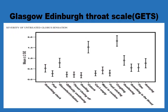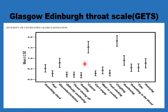Several patient symptom questionnaires have been used in the management of globus patients. One particularly useful scale is the Glasgow Edinburgh Throat Scale, which allows the patient to grade the severity of one of 15 different types of throat symptoms. It shows an emerging pattern in the average patient presenting with globus sensation only — some symptoms are scored highly and others quite low, and both the high and low symptoms are helpful in identifying and following up globus patients.